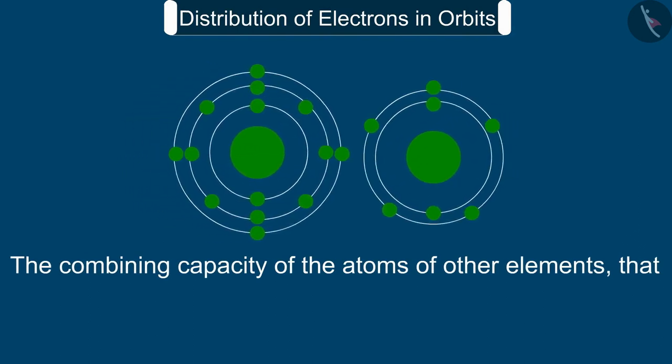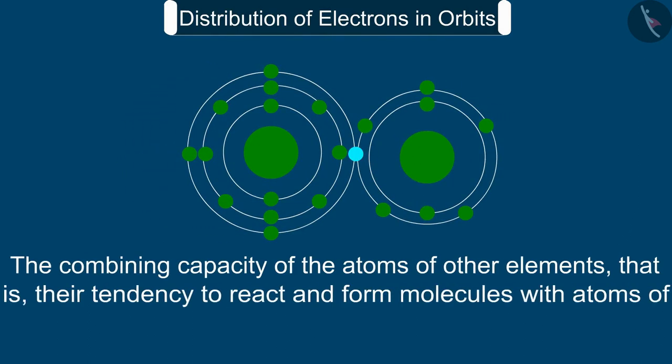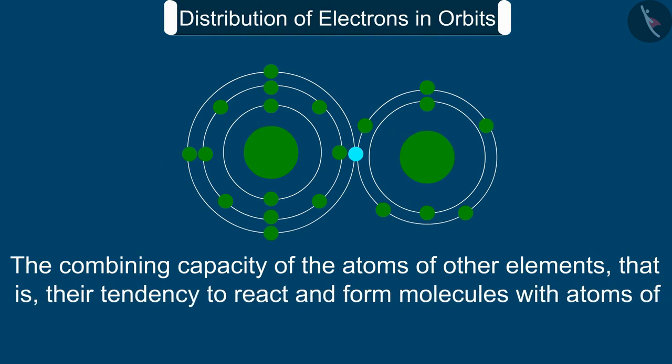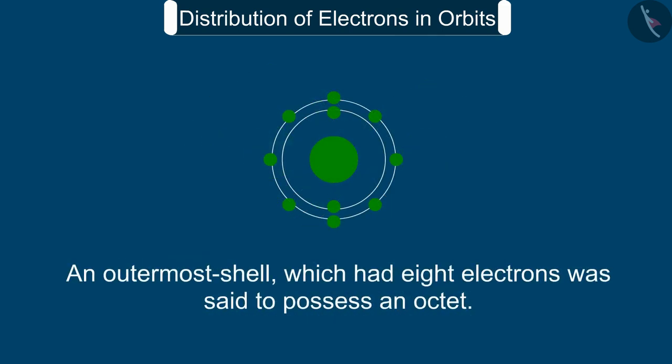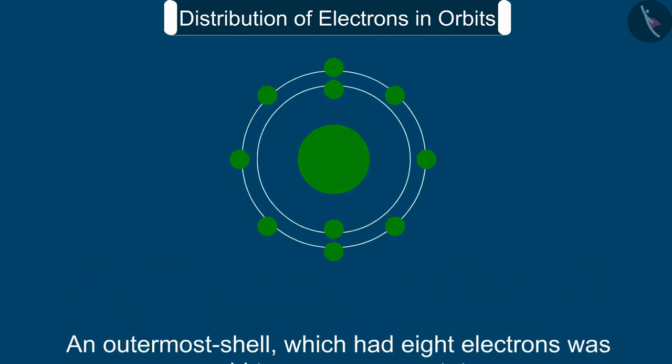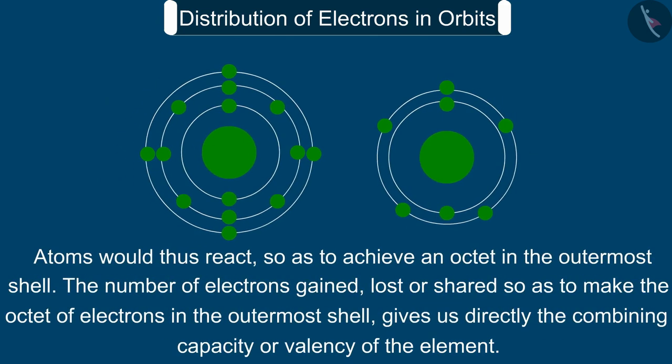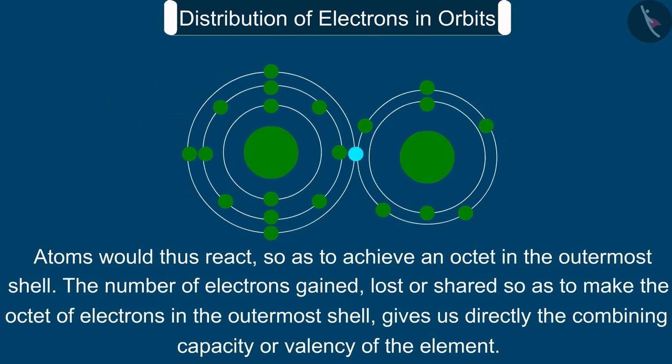The combining capacity of the atoms of other elements, that is their tendency to react and form molecules with atoms of the same or different elements, was thus explained as an attempt to attain a fully filled outermost shell. An outermost shell which had eight electrons was said to possess an octet. Atoms would thus react so as to achieve an octet in the outermost shell.